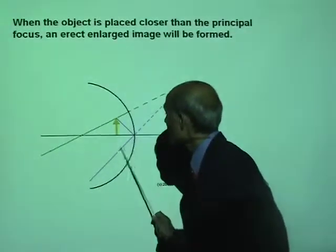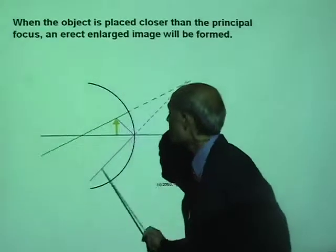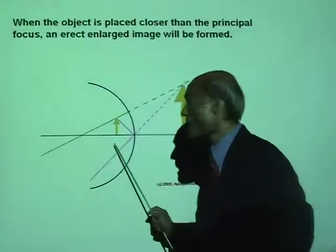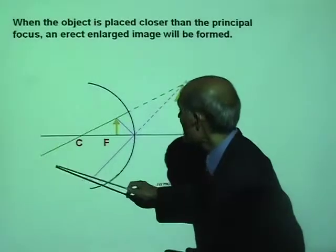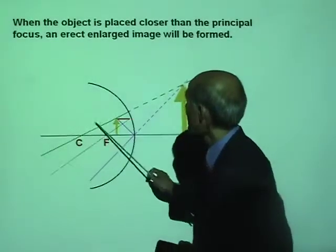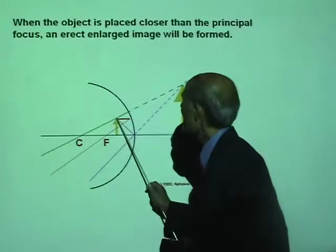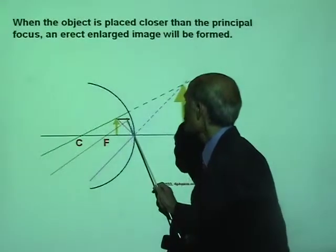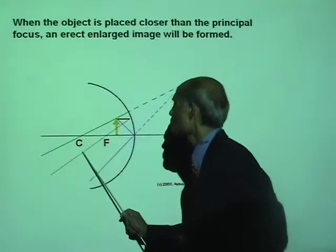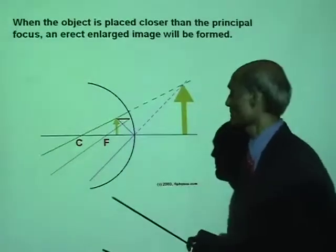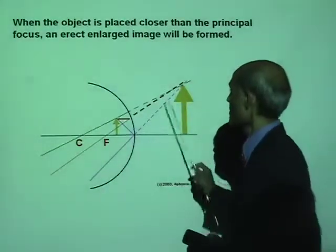These two reflected rays — the pink and the green — are the reflected rays. A ray parallel to the principal axis, after reflection, goes through the principal focus. Now that image that you saw was not a real image.